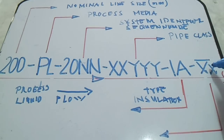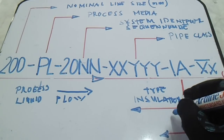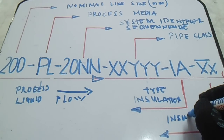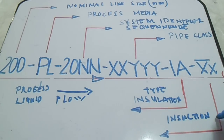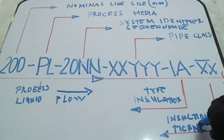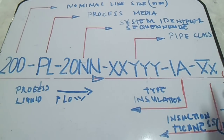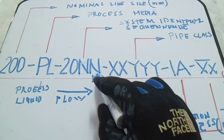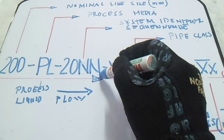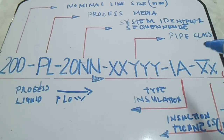Last is the insulation thickness. This thickness is in millimeters. And this is our flow process line, or flow direction. So this is all the meaning of the line number.